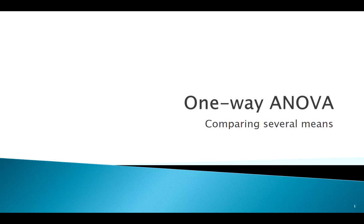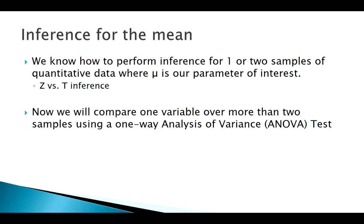Welcome back. Today we're going to be talking about a new topic called one-way ANOVA. The purpose of ANOVA is to compare multiple group means. We know how to deal with one sample of quantitative data, and two samples — with Z vs T, matched pairs, or independent. But that is for one or two groups. So what about three or more groups? That's where ANOVA comes in.